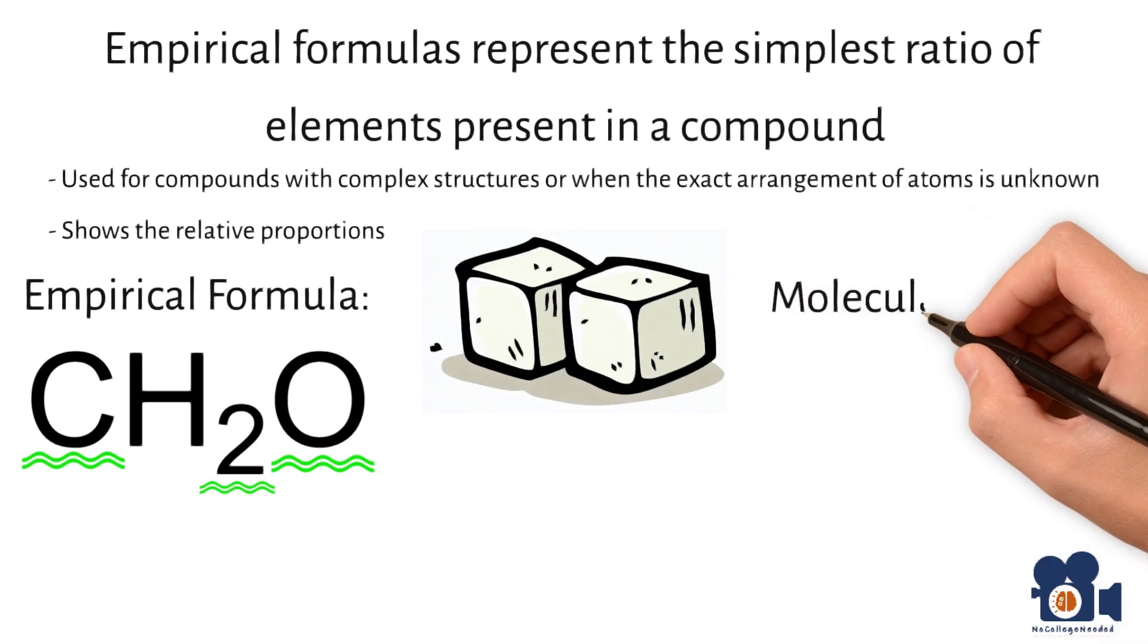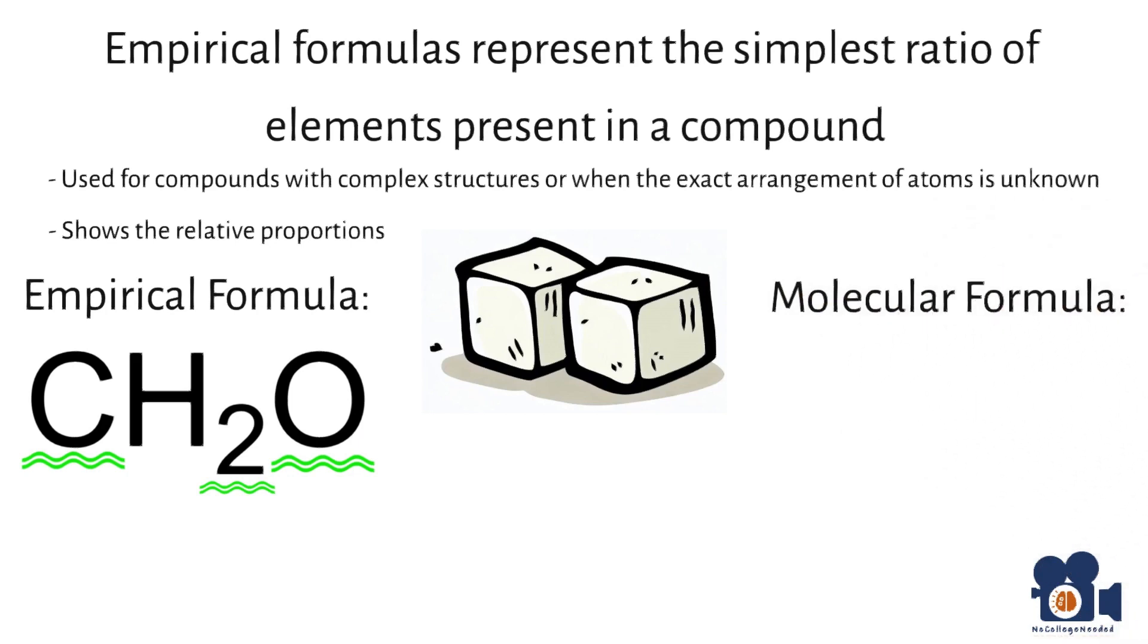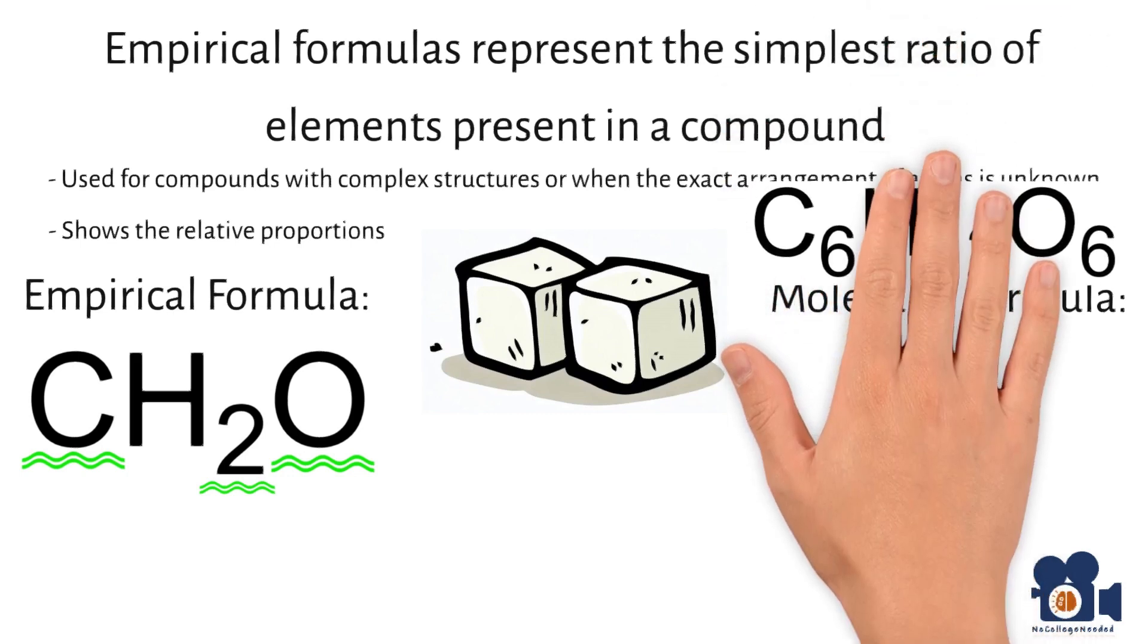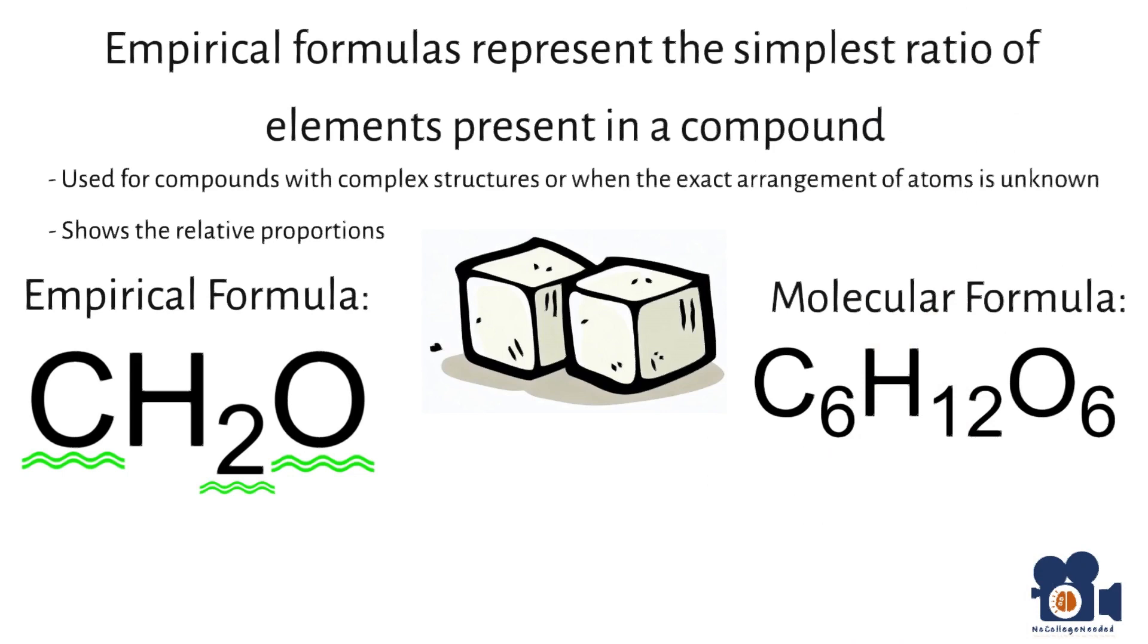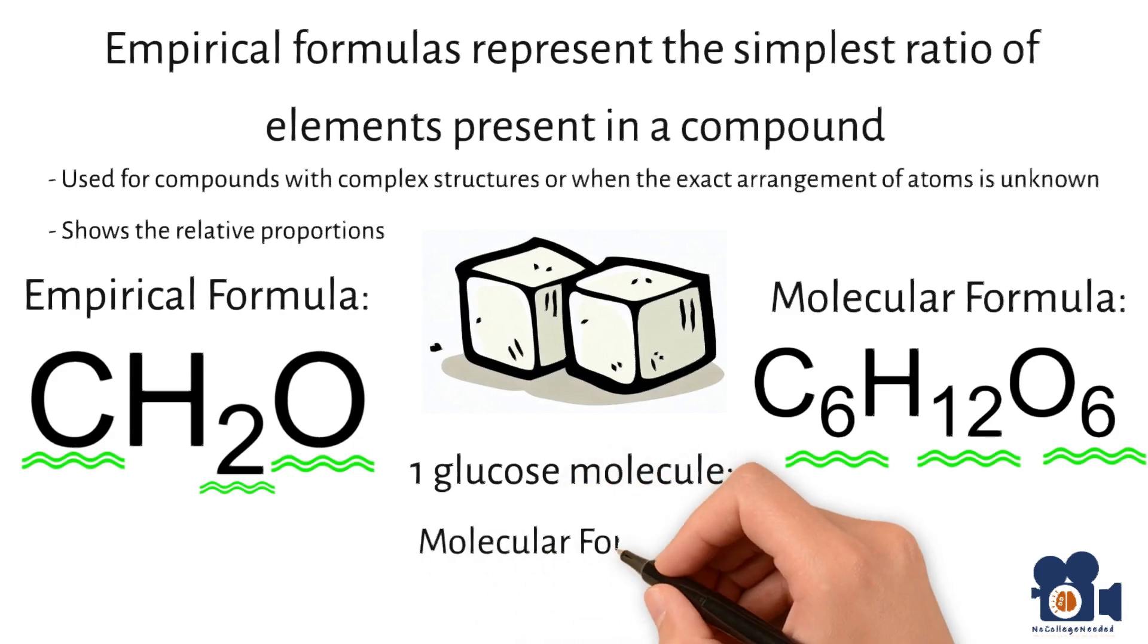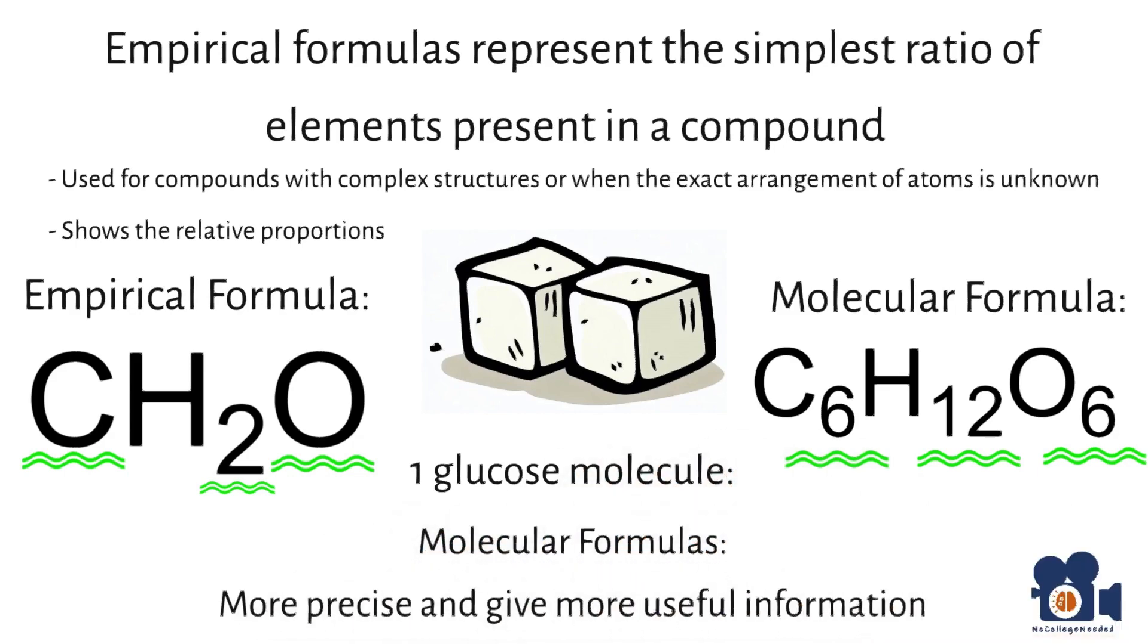On the other hand, a molecular formula gives the actual number of atoms of each element in a molecule. It provides a more precise representation of the compound's composition. Using the example of glucose, its molecular formula is C6H12O6, indicating that a glucose molecule consists of six carbon atoms, 12 hydrogen atoms, and six oxygen atoms. This is the reason we focus on molecular formulas, as they provide more precise and useful information.